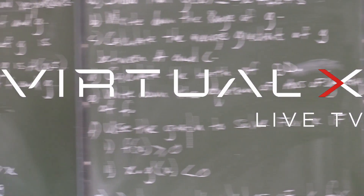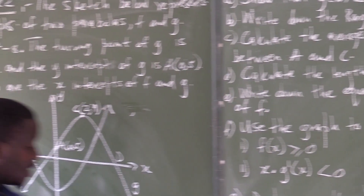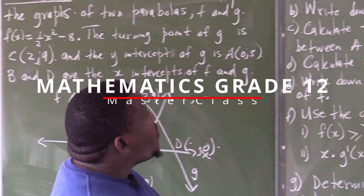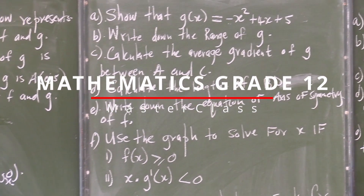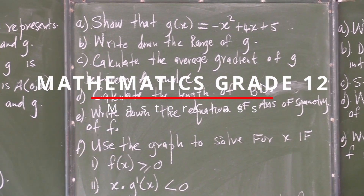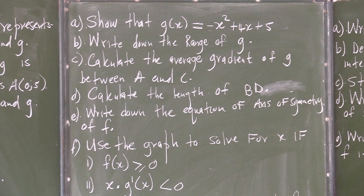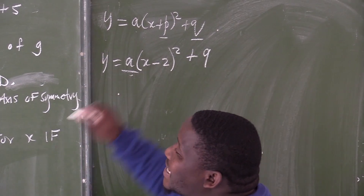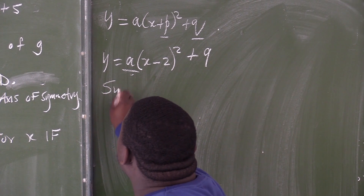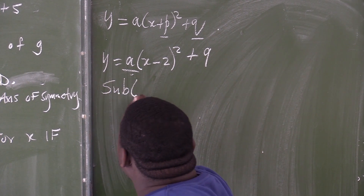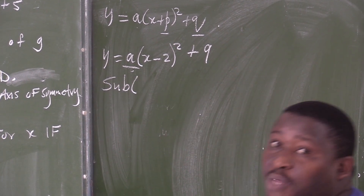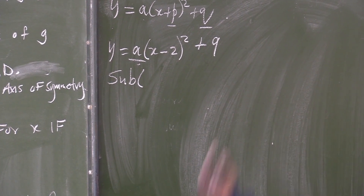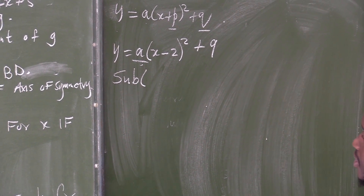Here, we are given two graphs that are drawn for us. The first question is saying, show that g of x is equal to negative x squared plus 4x plus 5. How am I going to find a? I need to substitute a point. Which point are we going to substitute? Any point, as long as the point lies on the graph of g.